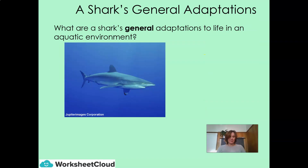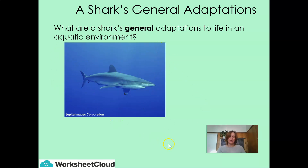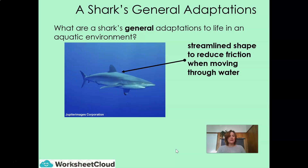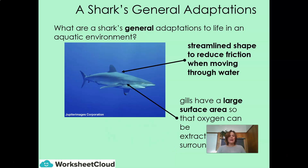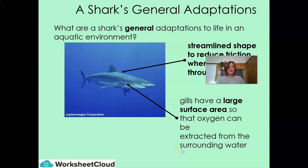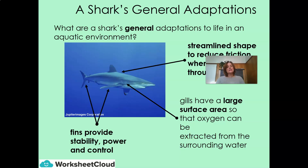The first animal we're going to take a look at is a shark. When you look at a picture of a shark, what are a shark's general adaptations to life in an aquatic environment? You can see it has a streamlined shape — this is to reduce friction when moving through the water. It also has gills that have a large surface area so that oxygen can be extracted from the surrounding water, as well as fins to provide stability, power and control. Remember, Grade 7s, these are general adaptations.